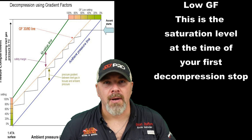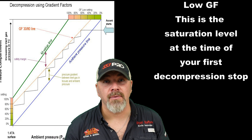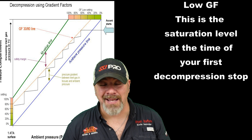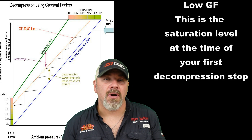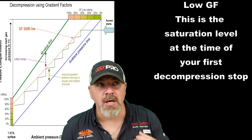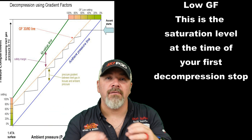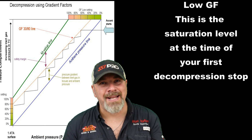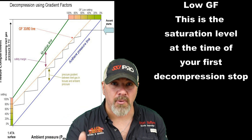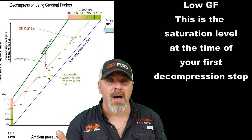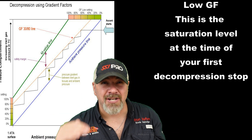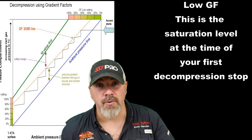Let's start with the low gradient factor. What does that number actually represent? As you descend down through the water column and spend a certain amount of time, your body is going to be on-gassing inert nitrogen. As you start to ascend, that nitrogen within the system will start to expand. Some will come out through your lungs as you exhale, but a lot of it will expand through your tissues, and that low gradient factor is going to be the level you set for your first decompression stop.